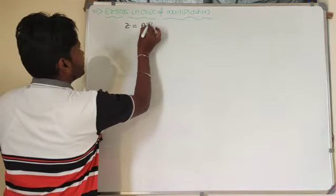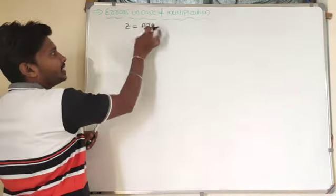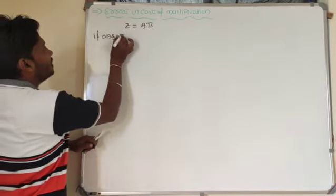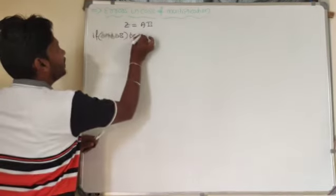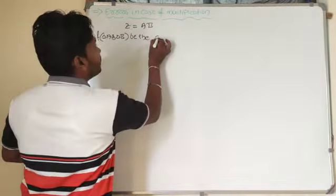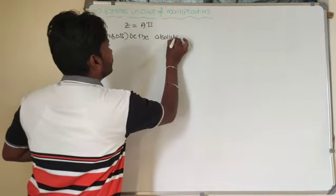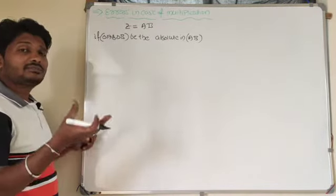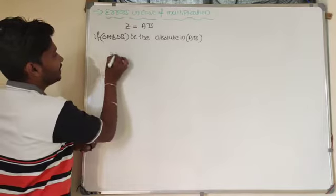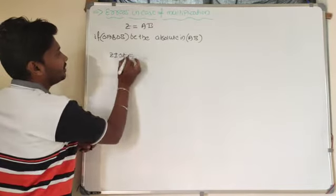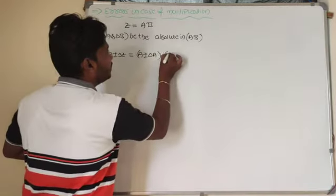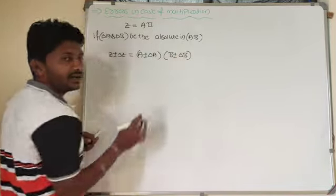Generally I will take the equation z equal to a into b. So z appears after multiplying a and b. Let delta of a and delta of b be the absolute errors in a and b respectively, and delta of z be the absolute error in z. I can rewrite this as z plus or minus delta of z is equal to a plus or minus delta of a, into b plus or minus delta of b.